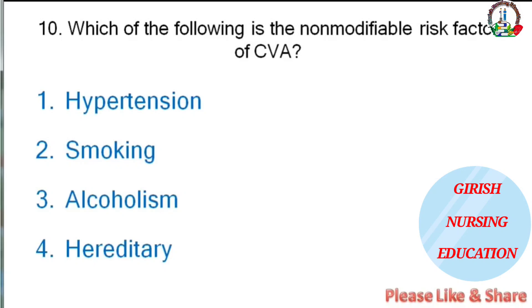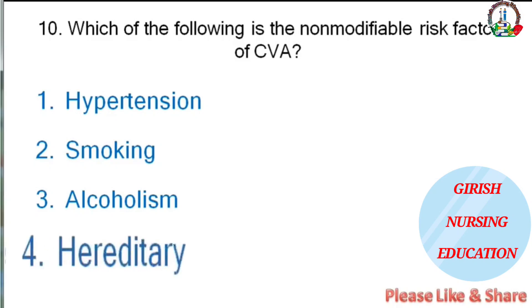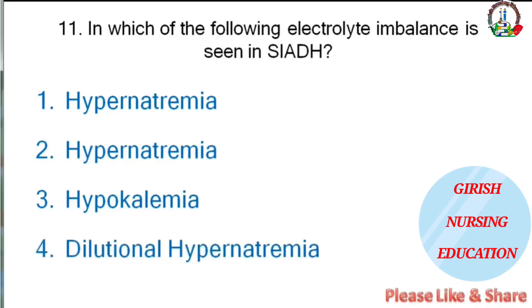Which of the following is a non-modifiable risk factor of CVA — hypertension, smoking, alcoholism, or hereditary? The correct answer is hereditary.